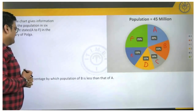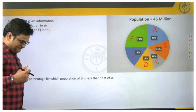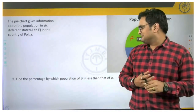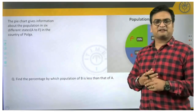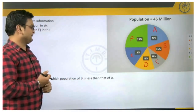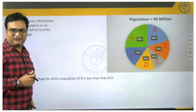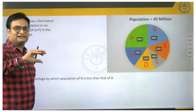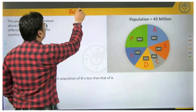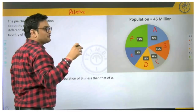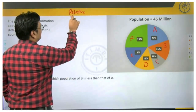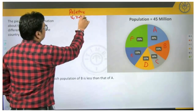The question asked is: find the percentage by which the population of B is less than that of A. This is a basic percentage comparison question where one variable is compared with respect to the other. There is an important learning here — the question is asked in percentage terms, which are relative terms. Relative terms are terms for which absolute value cannot be calculated, such as percentage, ratio, or degree.